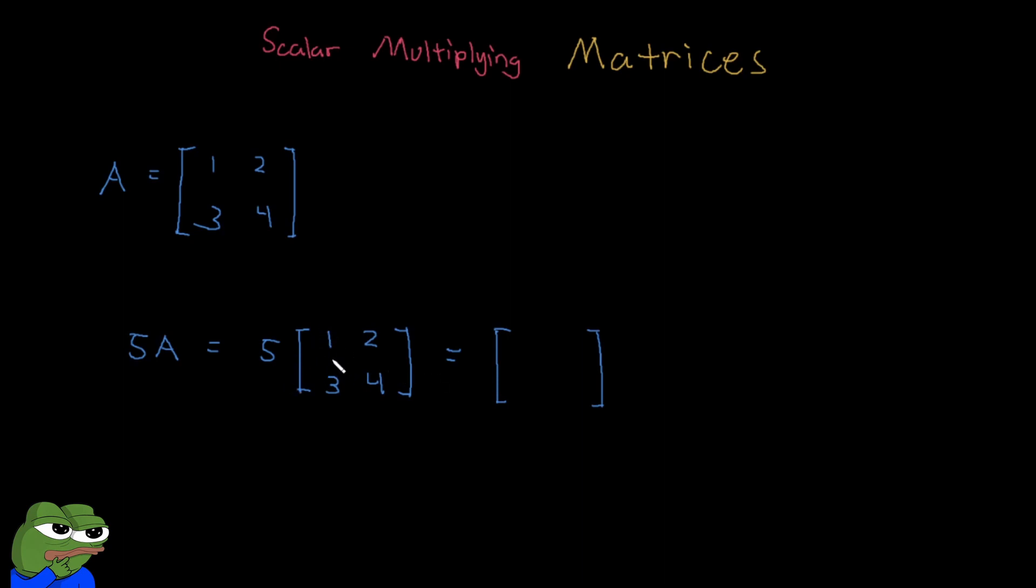So for example, here our top left element is 1 times 5, so that's 5. Then 2 times 5 is 10. 3 times 5 is 15. And 4 times 5 is 20. So you end up with this matrix.